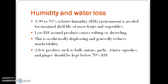Regarding humidity and water loss during transportation: the relative humidity around the fruit should be 90 to 95 percent, as this results in less water loss. Low relative humidity around the produce causes wilting or shriveling of the fruits, which is aesthetically displeasing and reduces marketability. However, some vegetables like onions, garlic, winter squashes, and ginger should be kept below 70 percent relative humidity.